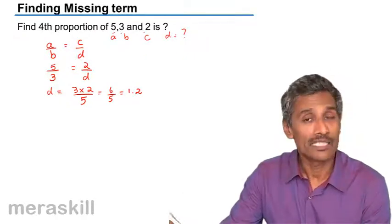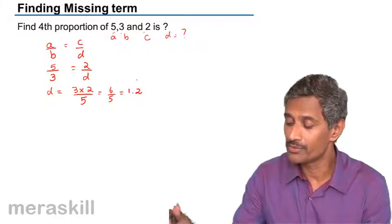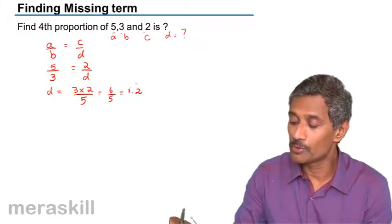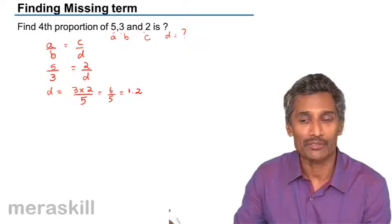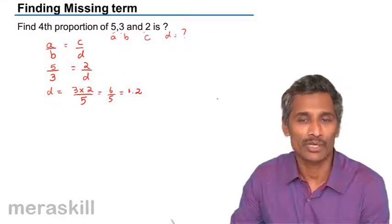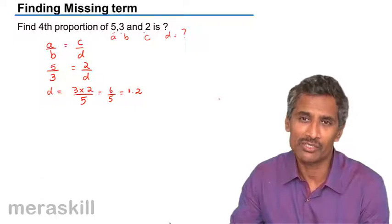That means D is going to be 1.2 which means that the fourth proportional to 5, 3 and 2 is 1.2. Simple example just to understand how we can use the concept just as a warm-up.